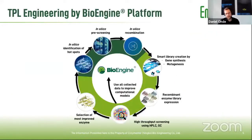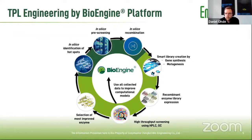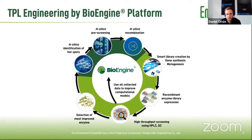For protein engineering, we use our proprietary platform. This works so that we first have an in-silico part where we identify hotspots. We can perform pre-screening, molecular dynamics, quantum mechanics, and calculate how good these spots are for mutation. We can then recombine these in silico, create smart libraries, reduce the library size, and then go into the laboratory to perform high-throughput analysis.